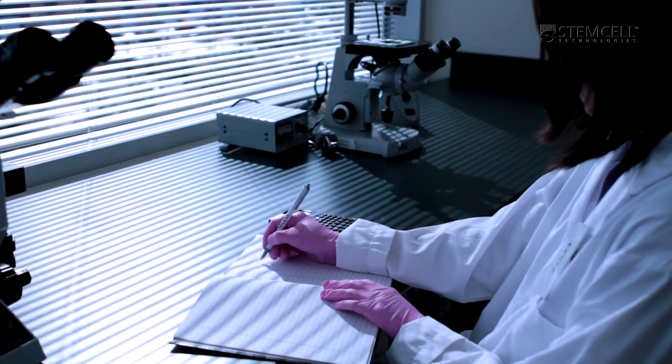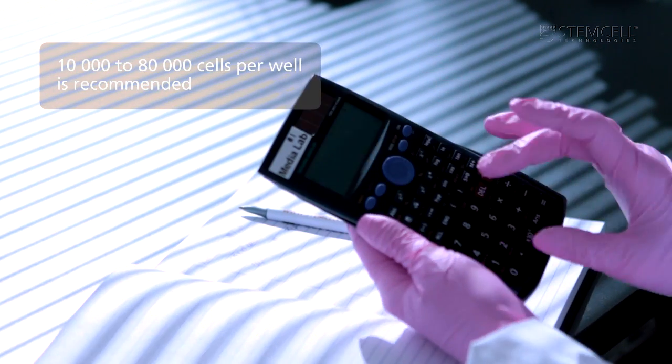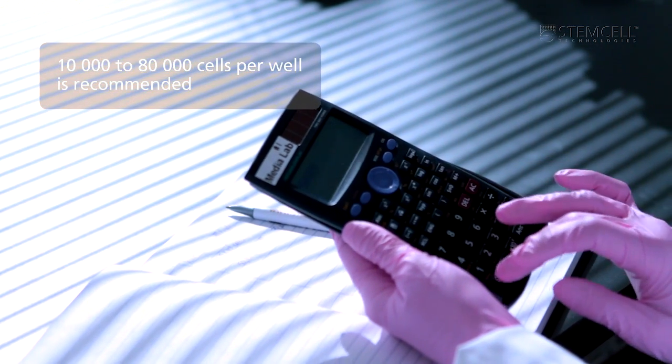Determine the optimal number of cells to plate to obtain one colony per well. A range of 10,000 to 80,000 cells per well is recommended.